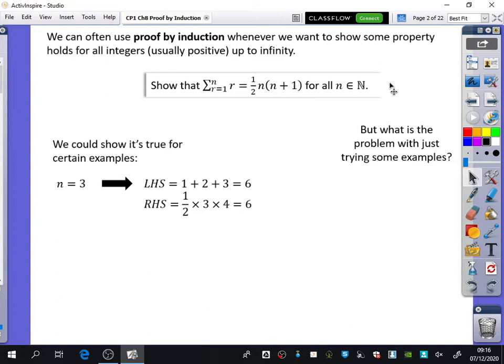But we're now going to try and do it with proof by induction. So I've said what we could do to try and show you that it's true is we could do it for certain examples. We could pick when N is equal to 3, we could substitute it into the left-hand side and we could just do 1 plus 2 plus 3, which is 6. You could then use the formula and say that it's a half times 3 times 4 and you do get that they're the same as each other.